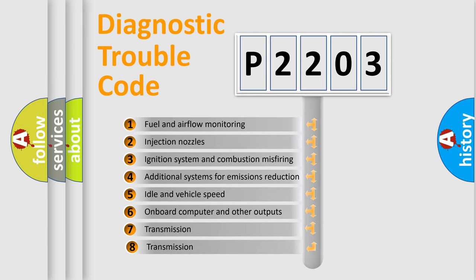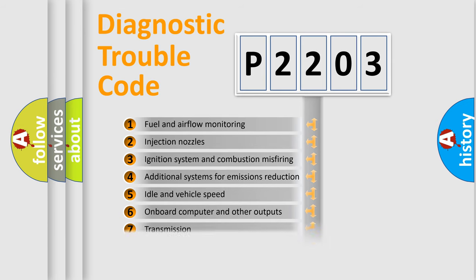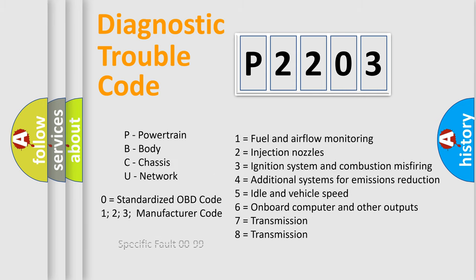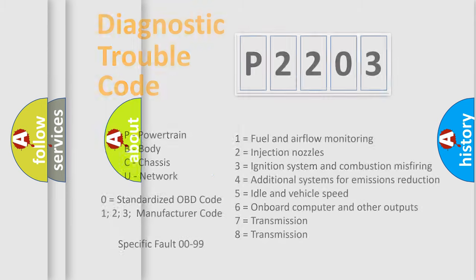The third character specifies a subset of errors. The distribution shown is valid only for the standardized DTC code. Only the last two characters define the specific fault of the group. Let's not forget that such a division is valid only if the second character code is expressed by the number zero.